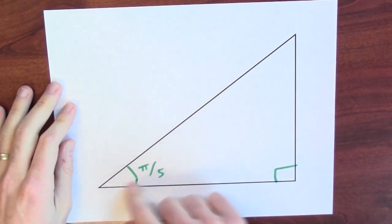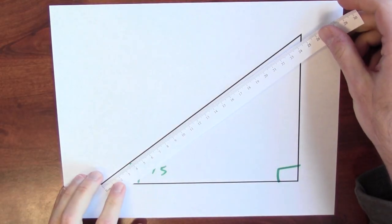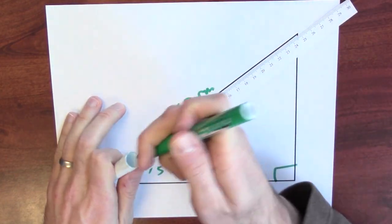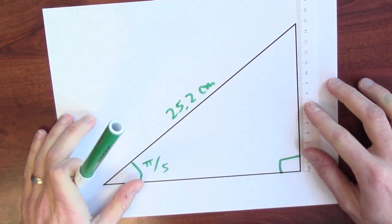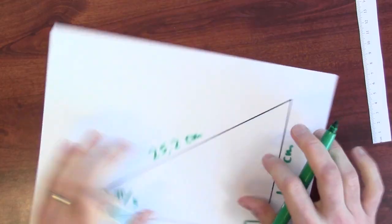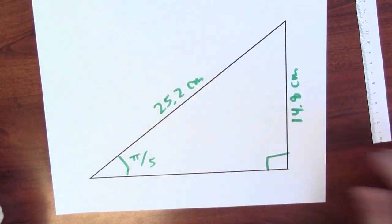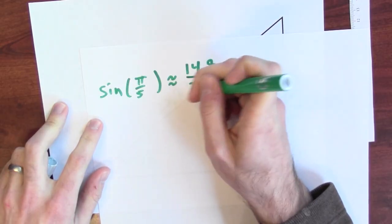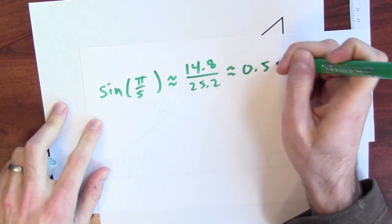Now that we've got a definition of sine, we can for instance calculate sine of pi over 5 if we build a triangle, any right triangle, with an angle of measure pi over 5. I built a right triangle, and this angle is pi over 5. I can use my little ruler to measure the hypotenuse. The hypotenuse here is about 25.2 centimeters. And I can measure the opposite side, and the opposite side is about 14.8 centimeters. And sine is the opposite side over the hypotenuse, which means sine of pi over 5 is about 14.8 over 25.2, which is about 0.59.